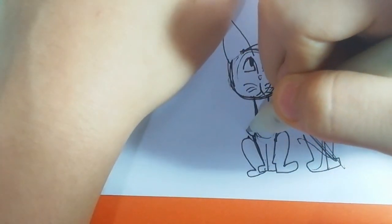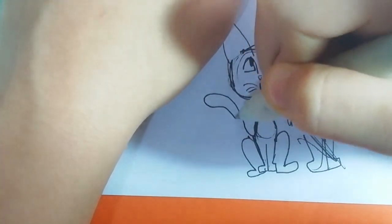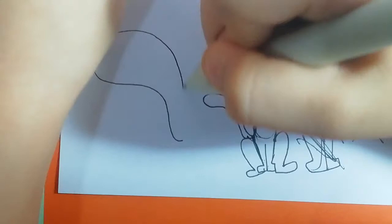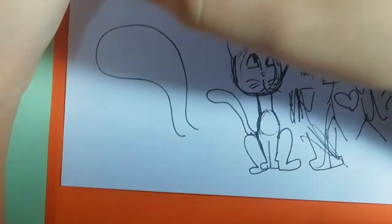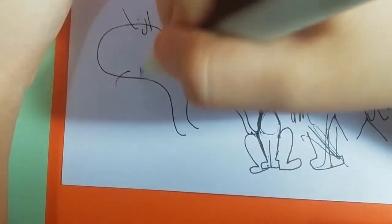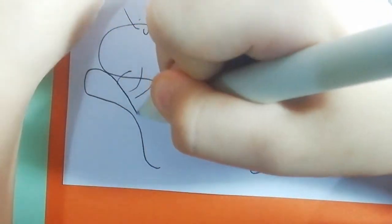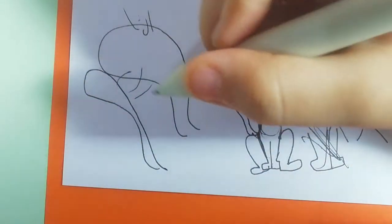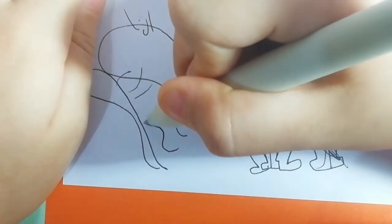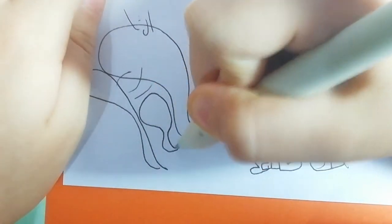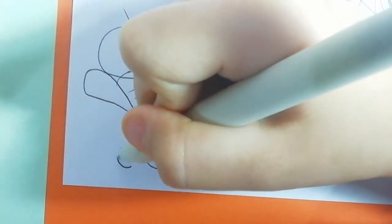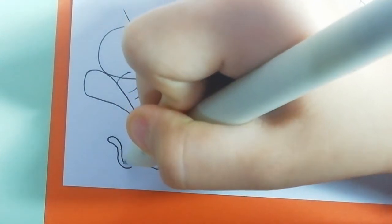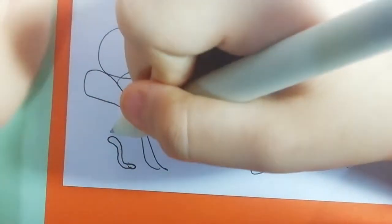Now you're just gonna go and make a tail. You can make it fluffy like this, or you can make it not fluffy like this. If you want it to be fluffy, you just make it more big in the end. But if you want it to be not fluffy, you're just gonna do it the same, like a worm.